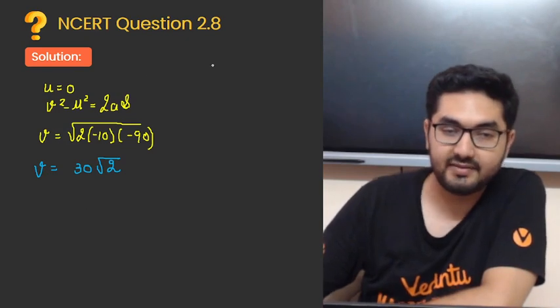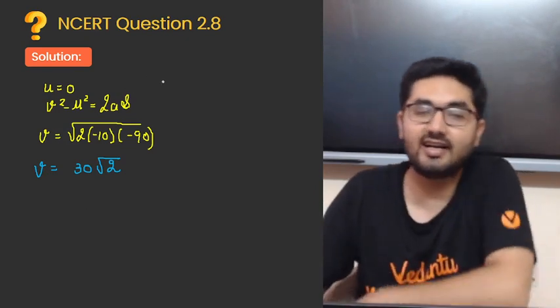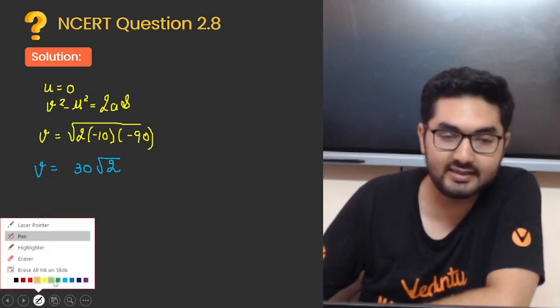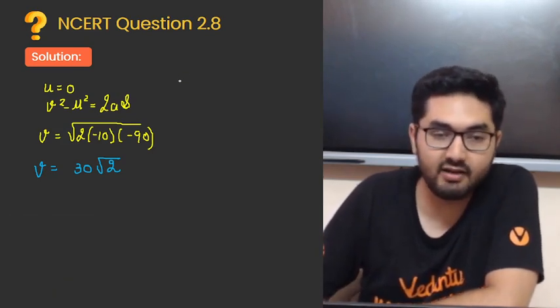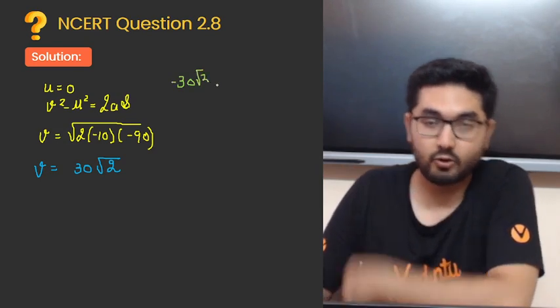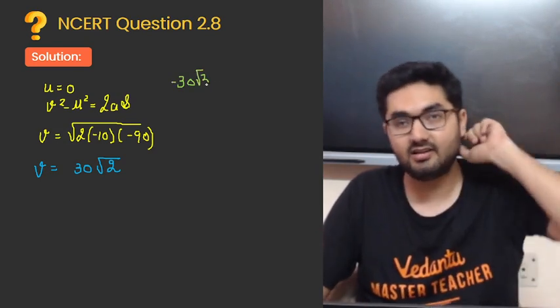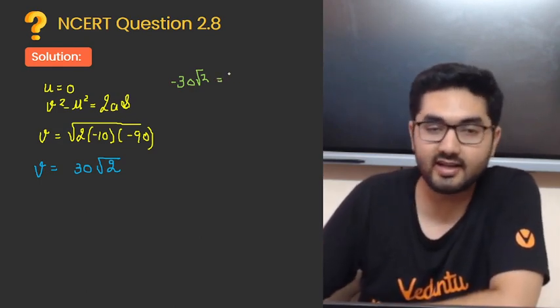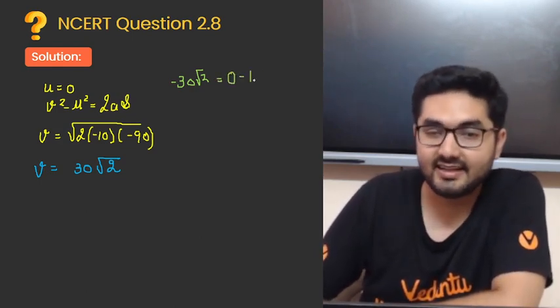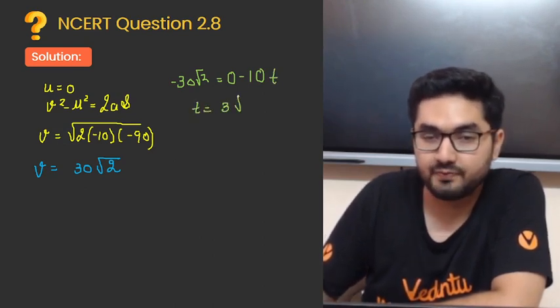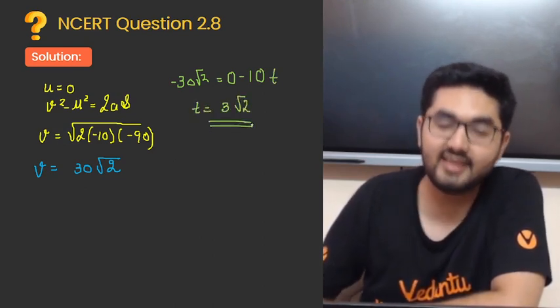Ek baar time bhi note kar lete hain. Yahan se yahan aane mein isko kitna time laga? v equals to u plus at. v kitna hai? v aagya aapka 30 root 2 minus mein, kyunki woh neeche ja raha na. v equals to u, u kitna hai? Zero. Minus 10 into t. Yahan se aapki paas t kitna aajayegi? 3 root 2. Yahan se t ki value aajayegi 3 root 2.